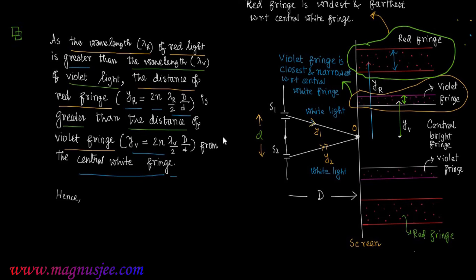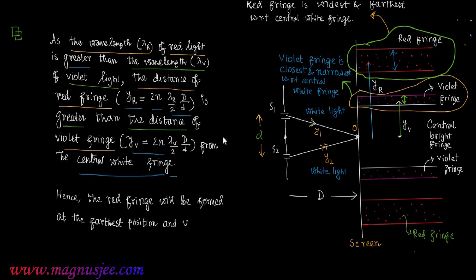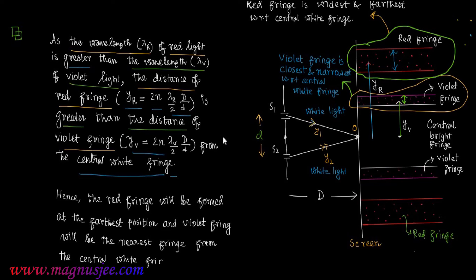As the distance of the red fringe is greater than the distance of the violet fringe, the red fringe will be formed at the farthest position from the central white fringe. Red fringe will be at the farthest position and violet fringe will be at the closest or nearest position with respect to the central white fringe.